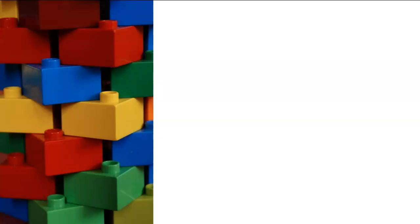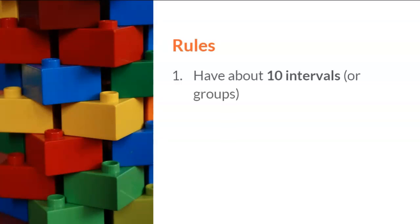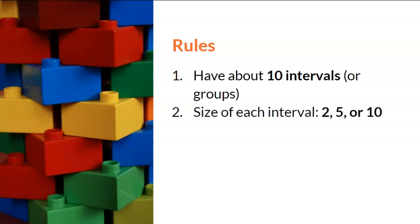In creating a grouped frequency table, there are four rules to follow. First, a grouped frequency table should have about 10 intervals. Interval is just a fancy word for groups — a grouped frequency table — so the table should have about 10 groups. Second, each interval or group should be a simple number, which is typically 2, 5, or 10.